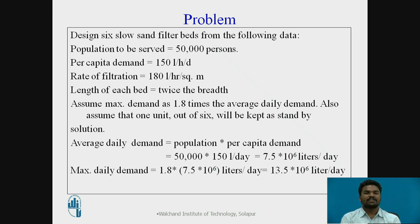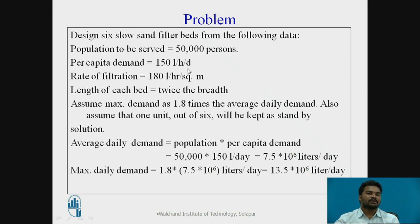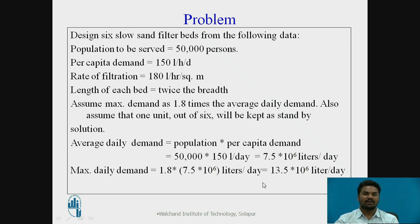Solution: Average daily demand = population × per capita demand. Per capita demand means each person requires 150 liters of water per day. So average daily demand = 50,000 × 150 = 7.5 × 10⁶ liters per day. Maximum daily demand = 1.8 × 7.5 × 10⁶ = 13.5 × 10⁶ liters per day.